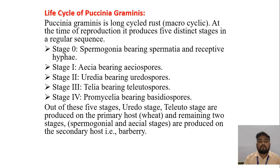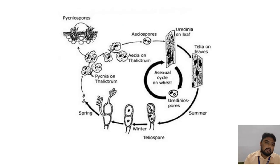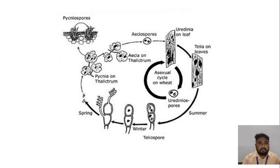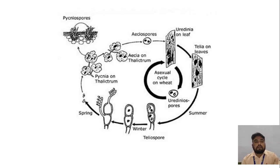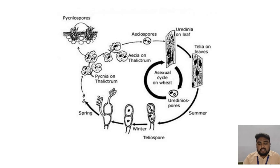Example: Barberry. The life cycle shows that aeciospores produce uredinia on a leaf, and telia on the leaves. After teliospores are released in spring season, the Puccinia on the teleutospore — the basidiospores are released and they grow into the new Puccinia plant.